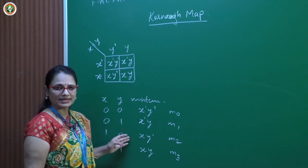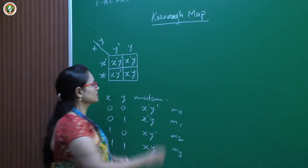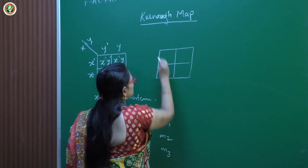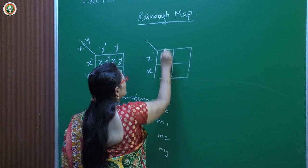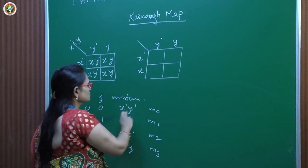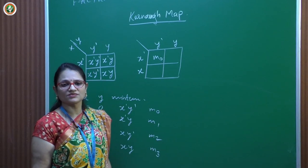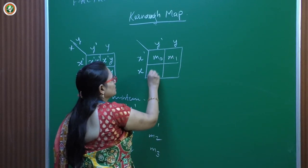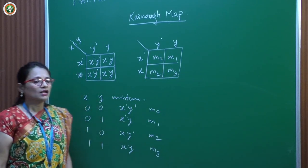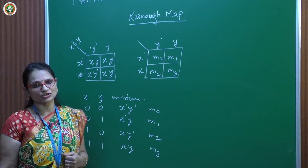I want you to relate this truth table to the Karnaugh map. If I redraw it: x-dash, x on the rows; y-dash, y on the columns. The square at y-dash, x-dash is m0; the next is m1; m2 and m3 follow. Once we have this grid, how does it help us simplify the given Boolean expression? Let us see with an example.